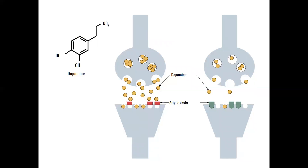So by reducing dopamine, the drug has notable benefits for people who take it. People who experience hallucinations and delusions often have an excess of dopamine, and so being able to control that has therapeutic benefits because it reduces hallucinations and delusions.